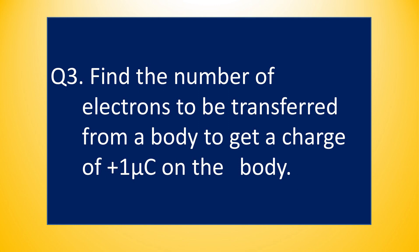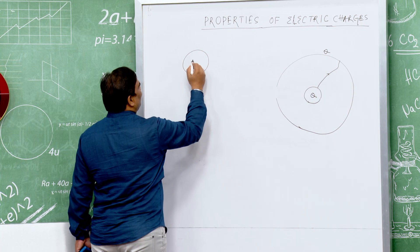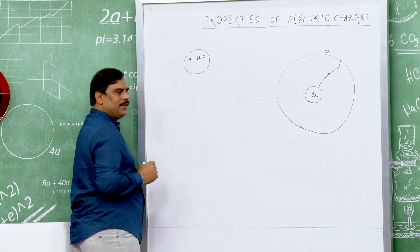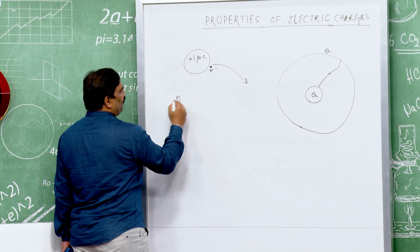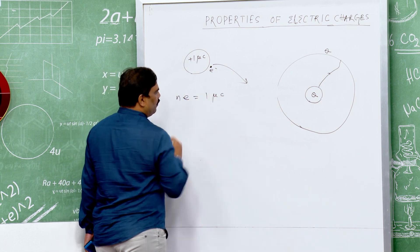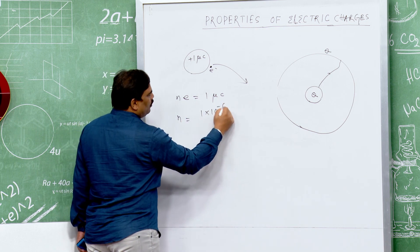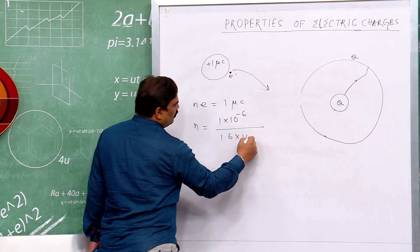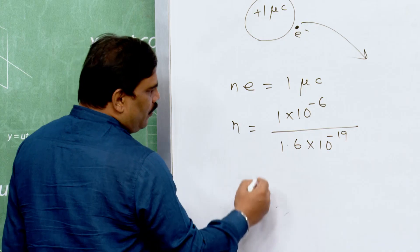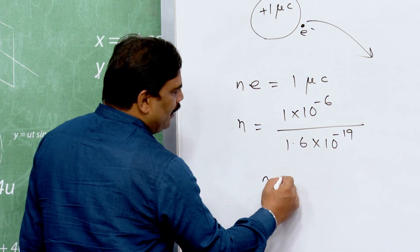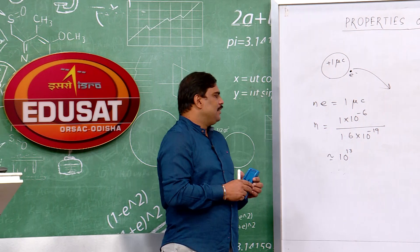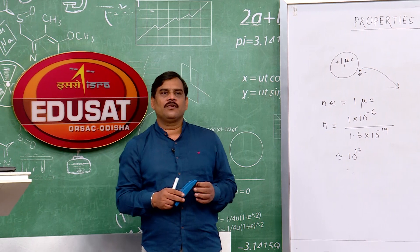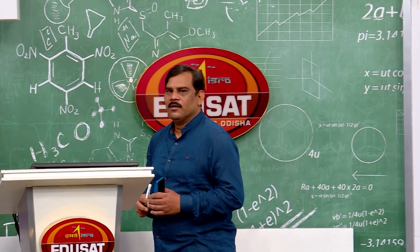My third question: find the number of electrons to be transferred from a body to get a charge of 1 microcoulomb. To get a charge of +1 microcoulomb on a body, I have to take away some electrons from it. If the number of electrons taken away is n, then ne = 1 microcoulomb. So n = 10⁻⁶ / (1.6 × 10⁻¹⁹) which comes to the order of 10¹³. So if we transfer 10¹³ electrons, we can develop a charge of +1 microcoulomb on the body.